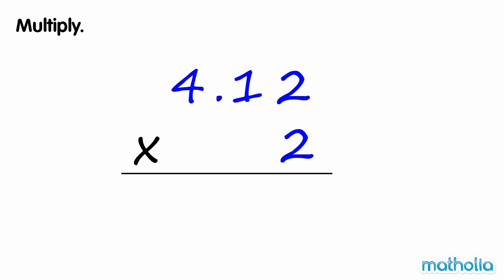Multiply. Find 4.12 times 2. Start by multiplying the hundredths. 2 times 2 hundredths equals 4 hundredths.